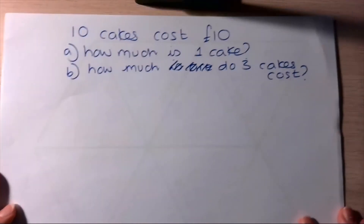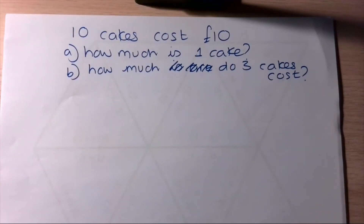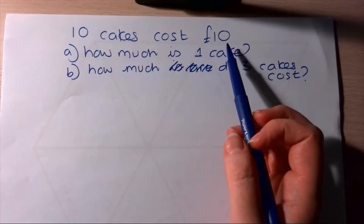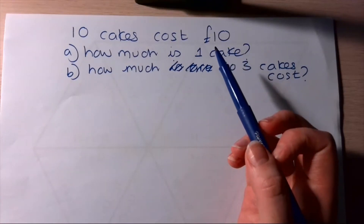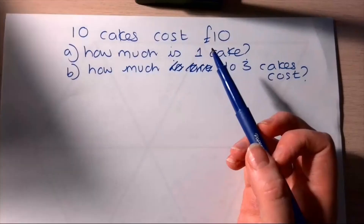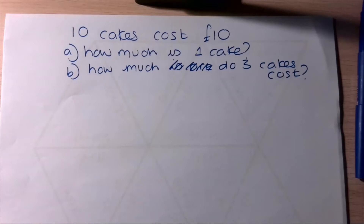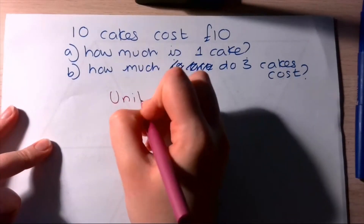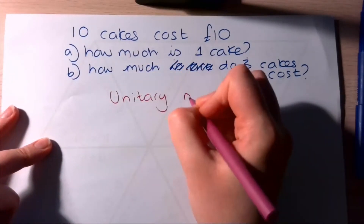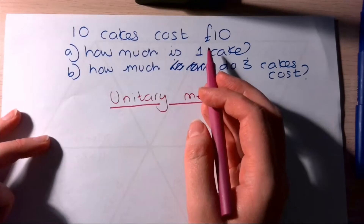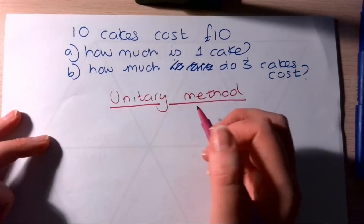Here's a nice one to start off on: ten cakes cost ten pounds altogether, so how much is one cake? If ten cakes cost ten pounds, then one cake costs one pound. That's quite nice — you can probably see it straight away. What we're going to look at today is something called the unitary method.